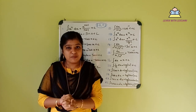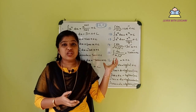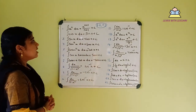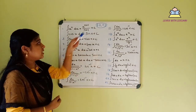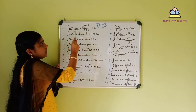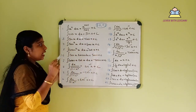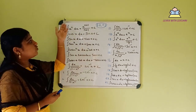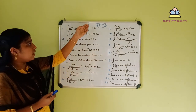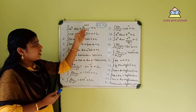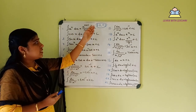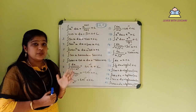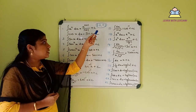First, the power rule: integral of x^n dx equals x^(n+1) divided by (n+1), plus c. That's why we always add the constant c. For example, integral of x^5 dx equals x^6 divided by 6, plus c.